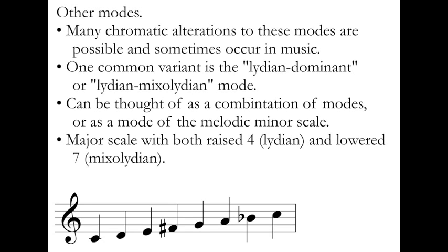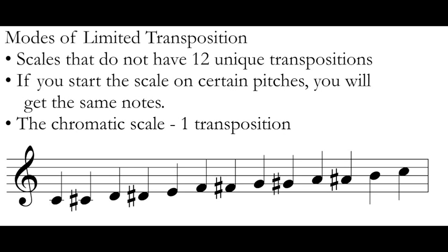Let's move along from modes to a different grouping of scales. Modes of limited transposition may be a slightly intimidating phrase, but it is not that complicated of a concept. When we talk about modes of limited transposition, we are talking about scales that do not have 12 unique transpositions. What that means is that if you start the scale on some pitches, you'll get the same notes as if you start on different pitches. This is different from our common major scale — if you start the major scale on any chromatic pitch, you will get a unique collection; there's never going to be the same collection showing up on different pitches.